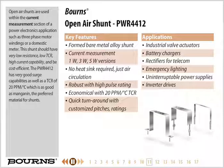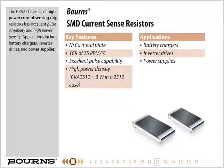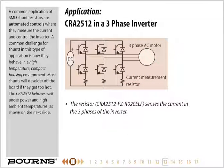The CRA2512 series of high-power current-sensing chip resistors has excellent pulse capability and high power density. Applications include battery chargers, inverter drives, and power supplies. A common application of SMD shunt resistors is automated controls where they measure current and control the inverter. A common challenge in this type of application is how they behave in a high-temperature, compact housing environment, as most shunts will desolder off the board if they get too hot. The CRA2512 behaves well under power and high ambient temperatures, as shown on the next slide.